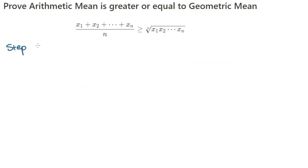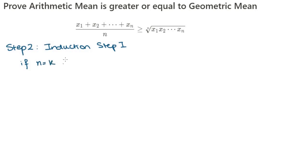Step 2 is the induction proper, which itself is split into two steps. The first step of the induction is to prove that if n equals k is true, then n equals 2k is true.